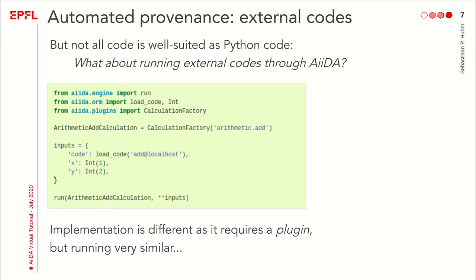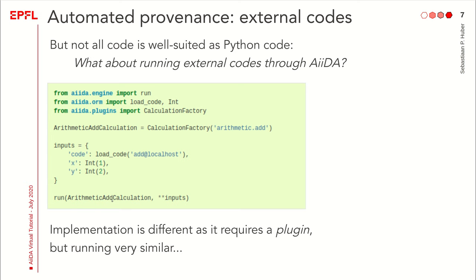To call this through AIDA, you define the inputs in a Python dictionary: x and y, wrapped in the Int data type. In addition, you define a code input that references the binary — specifying the machine (in this case localhost) and the absolute path to the binary. To run it, you call run imported from the AIDA engine module, passing the class name (the plugin) and the inputs. When you do this, the provenance is recorded in the database: we see the three inputs, the calculation node itself, and two outputs — a retrieved folder containing all output files generated by the calculation, and optionally parsed results stored as separate nodes, in this case the sum.